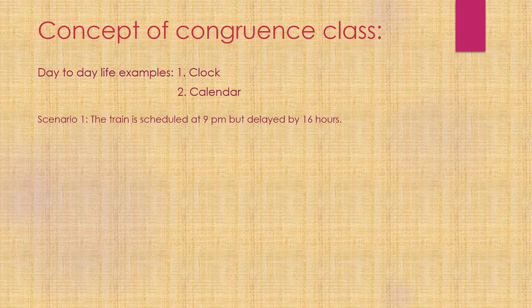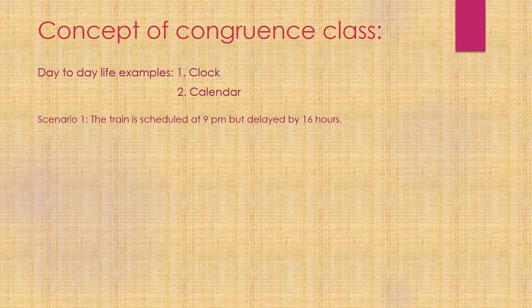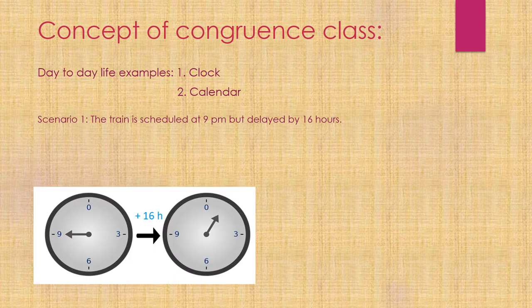Consider one scenario where the train is scheduled at 9pm but is delayed by 16 hours. At what time do you expect the train to reach the station? We will look at the clock. 9pm plus 16 hours gives us 1pm.